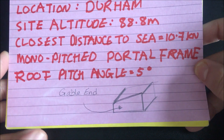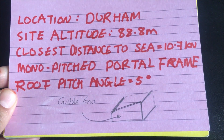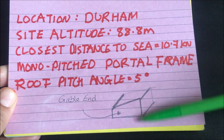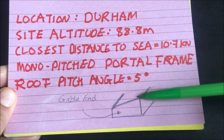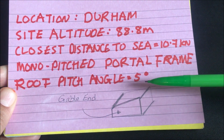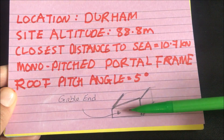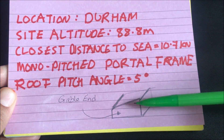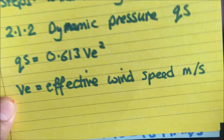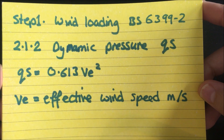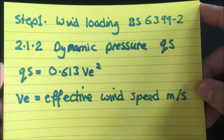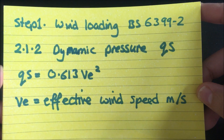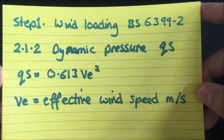I just want to quickly point out in this sketch here that this is a portal frame — it's monopitched, so it has a single sloping roof. This end here is known as the gable end. So step one for the wind loading: you're going to be needing British standard BS6399 part 2.